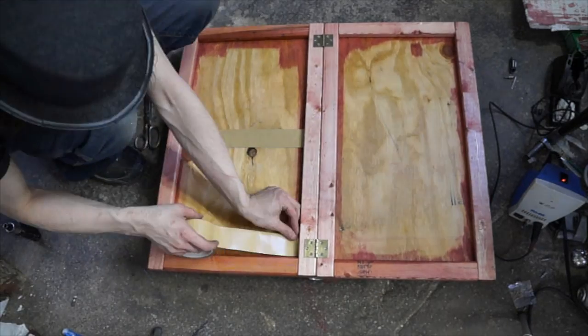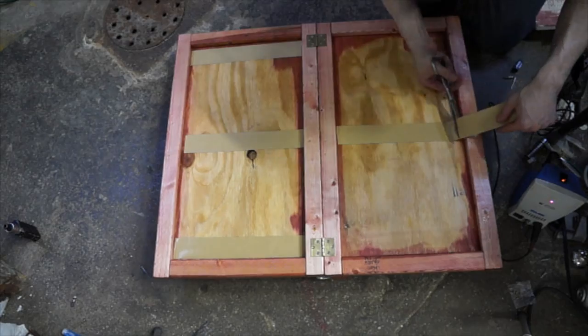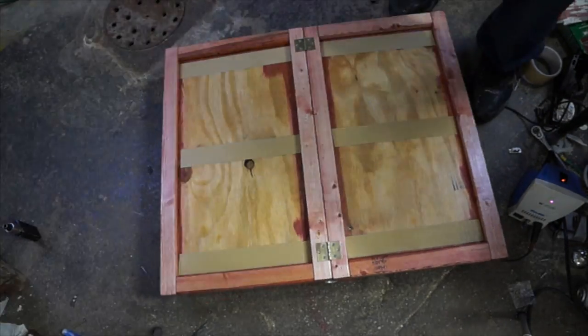Now the fun part. Start by laying down some carpet tape on the inside of the frame. Not only will this make screwing down the LED strips ridiculously easy, but it also helps to prevent them from warping as they get warm.